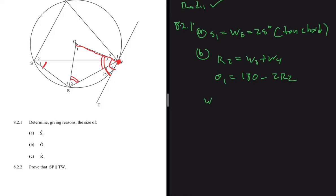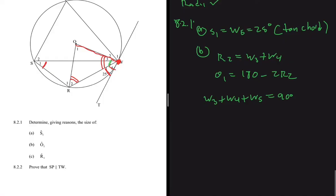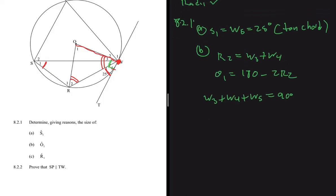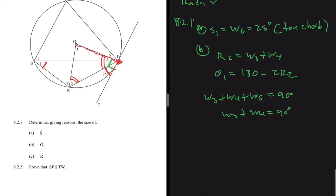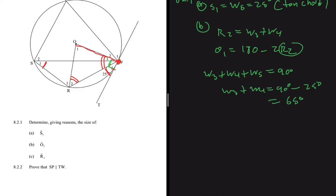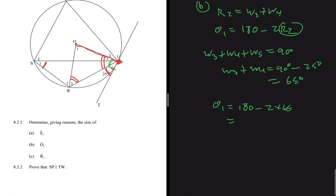OW is a radius touching the tangent, so it forms a 90-degree angle. Therefore W3 plus W4 plus W5 equals 90 degrees. Since W5 is 25 degrees, W3 plus W4 equals 90 minus 25, which is 65 degrees. Substituting into our expression: O1 equals 180 minus 2 times 65, which is 180 minus 130, giving O1 equals 50 degrees.